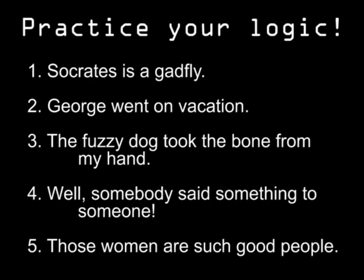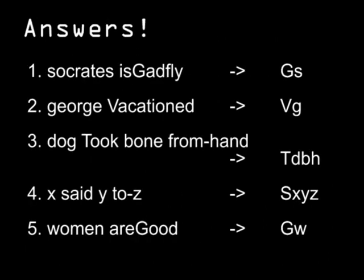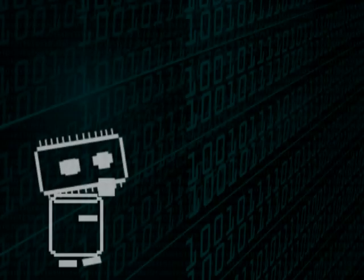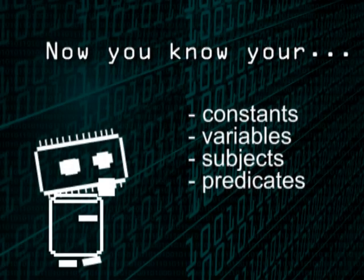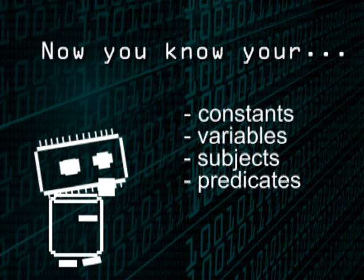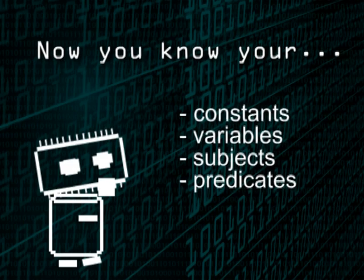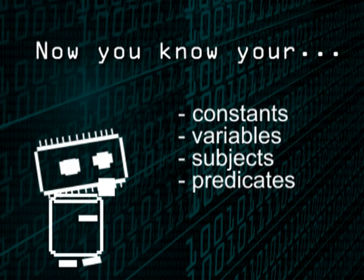Now you've gotten a handle on subjects and predicates in logic, so here are some ordinary language statements to translate into logic. You've seen the symbols that stand for words and statements, you understand constants and variables, and now you know something about subjects and predicates. But it's time to move on and look at quantifiers and bound variables, which will really tighten up your logical statements.